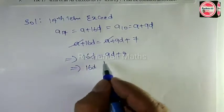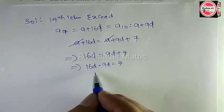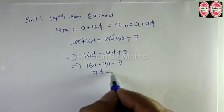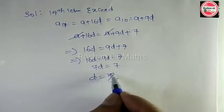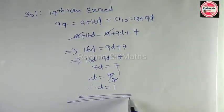16D, let's bring it this way. Minus 9D is equal to 7. Subtract both. 7D is equal to 7. D is equal to 7 by 7. Therefore, D is equal to 1.